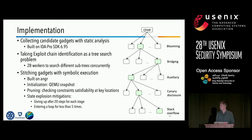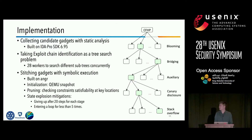The implementation of Kepler contains two modules. The first is a static analysis module, where we collect candidate gadgets through a static analysis plugin built on Datalog. In the second module, we convert exploit chain identification as a tree search problem over candidate gadgets. The search tree contains five steps corresponding to the previously discussed building blocks. We employ multiple workers to explore the search space concurrently, and the gadget stitching engine is built on angr. To prune the search space, we perform satisfiability checks at multiple key locations and mitigate state explosion by setting thresholds on the maximum steps in each stage and the maximum number of loop iterations.